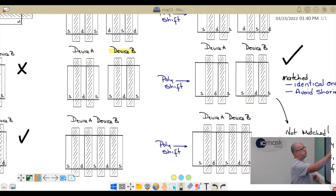We have device A and device B with source-drain-source, source-drain-source, and we're going to have the same mask shift. Poly is going to shift left: our source gets bigger, our drain stays the same, and our right source gets smaller for device A. Device B is exactly the same. In this case they're matched even though they're both affected by mask shift equally.